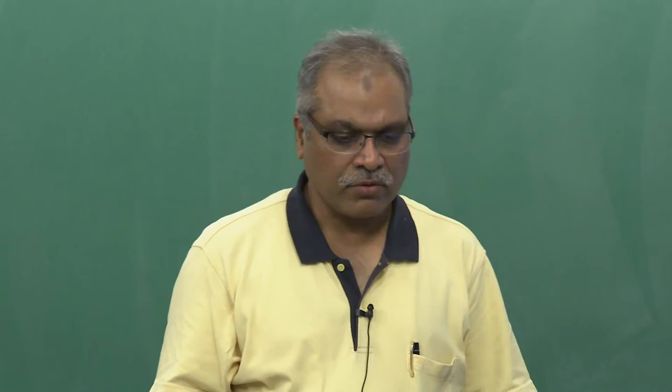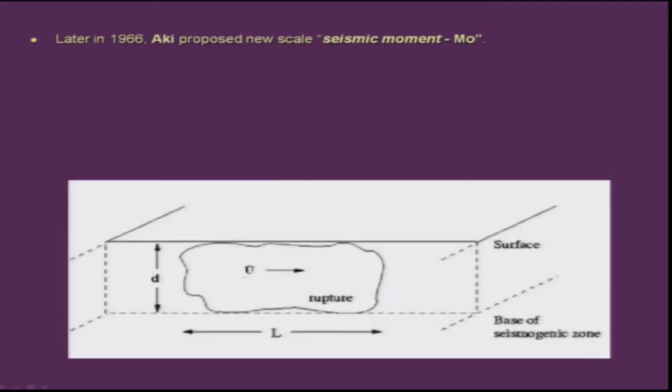Welcome back. In the last lecture we were talking about the different types of magnitude scales — local magnitude, body wave magnitude, and surface wave magnitude. All had some limitations. In 1966, as I was talking about in the last lecture, Aki proposed a new scale which was termed as seismic moment.